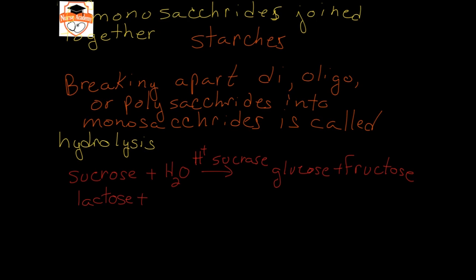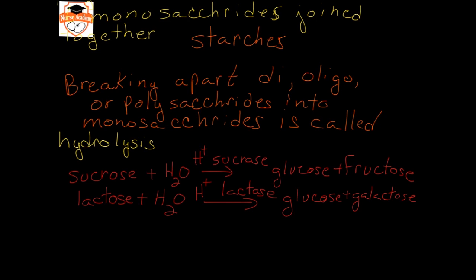Similarly, if you take lactose plus water in the presence of acid or lactase, you will get glucose and galactose. Lactase is the enzyme that people who are lactose intolerant lose as they reach adulthood. Most babies have lactase and can process their mother's milk; however, certain humans lose the ability to make lactase as adults and therefore cannot convert lactose into glucose and galactose, causing stomach problems. Taking something like Lactaid provides lactase enzyme to perform this conversion.